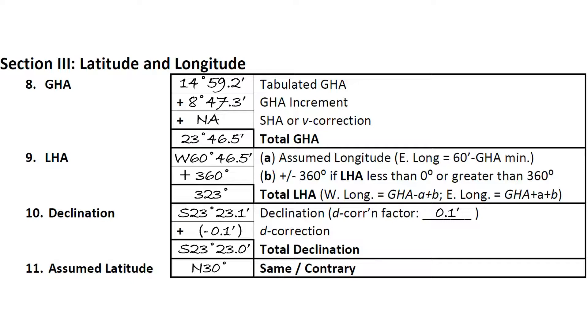In our example, we see that the declination is in the southern hemisphere, while our assumed latitude is in the northern hemisphere. These are not the same, so we circle contrary.